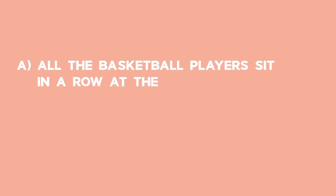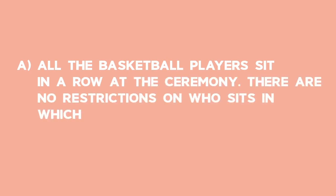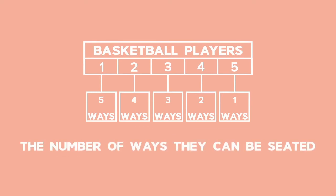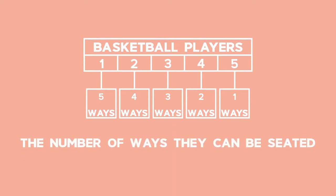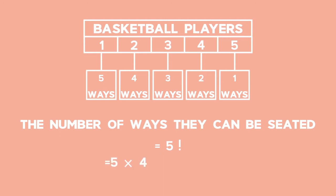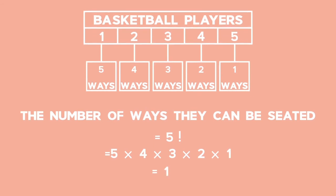Question A tells you that all the basketball players sit in a row with no restrictions on seating. The number of ways they can be seated can be written as 5 factorial, which is equal to 5 times 4 times 3 times 2 times 1, which equals 120.